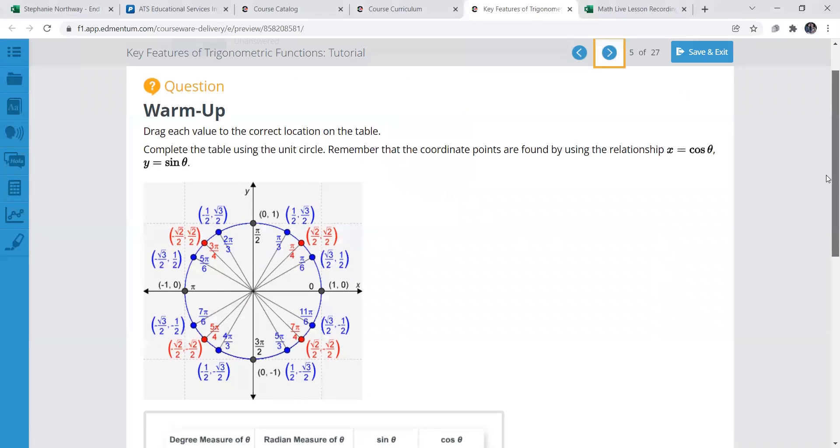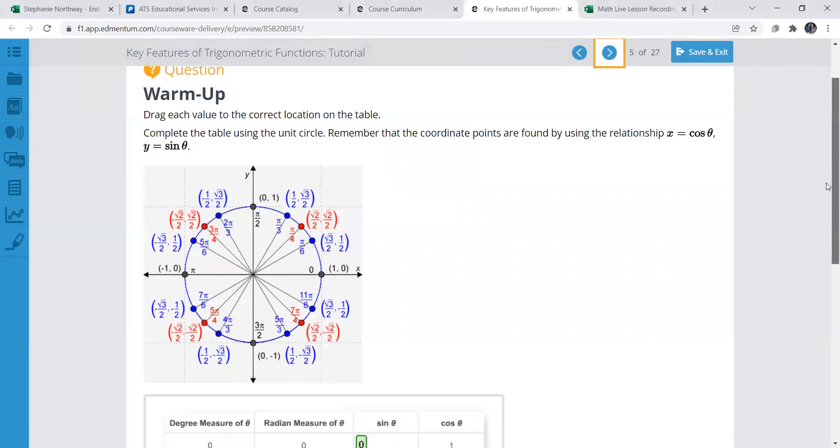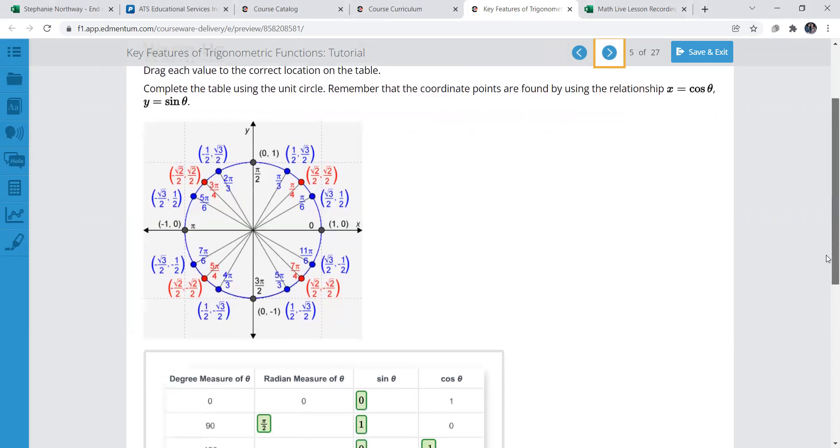So we have our unit circle here. You'll want to have a copy of this because it gives you points and angles. Now this one here doesn't have the angles on it, the degrees, but this gives you the points and the radians. However, you'll want one with the degrees also.